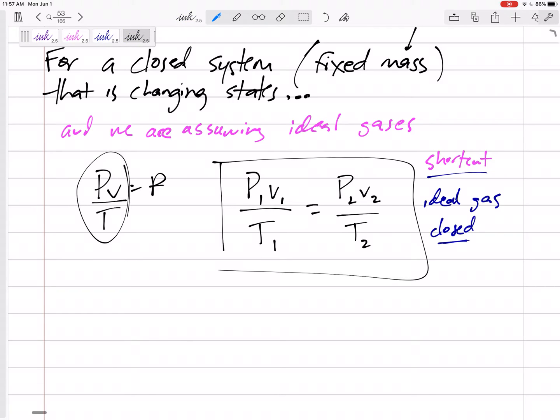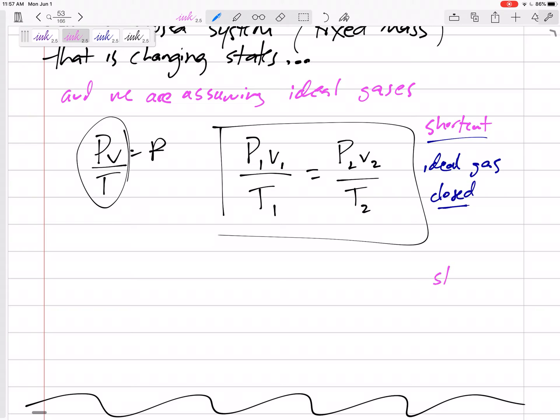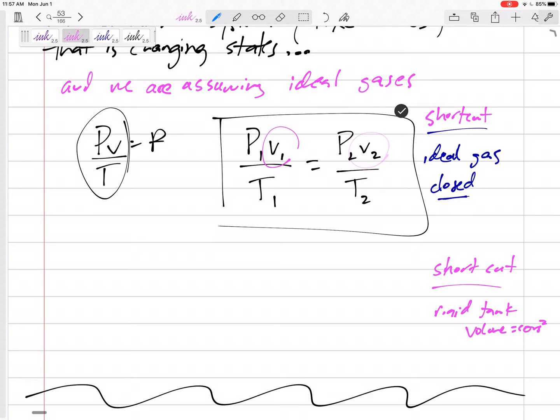All right. If it is closed and the tank is rigid. So I'll give us another shortcut. If the tank, if it is a rigid tank, what does a rigid tank mean? It means the volume is constant. Then we can divide this V out of both sides. If the mass and volume are constant on both sides, then P1 over T1 equals P2 over T2. So here's another shortcut that we can only use for ideal gas, closed, rigid tank. Ideal gas, closed, rigid tank. And you know, it's okay.